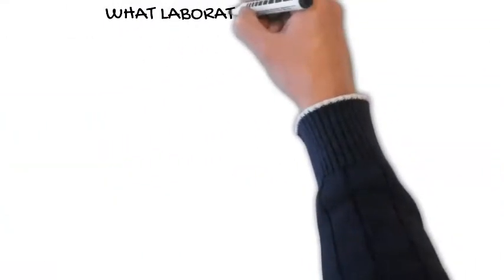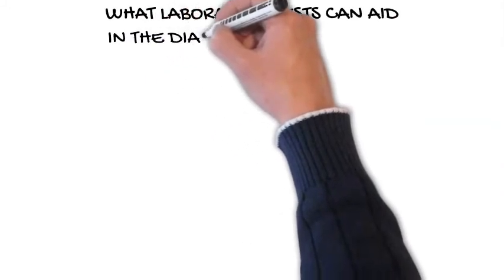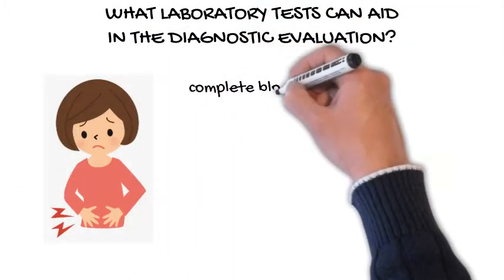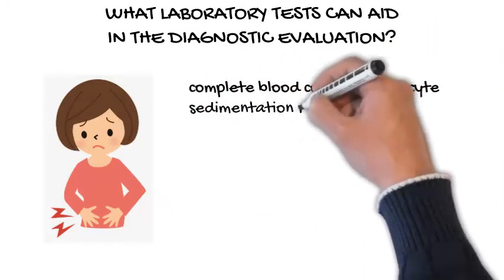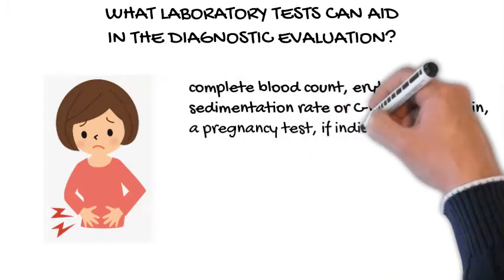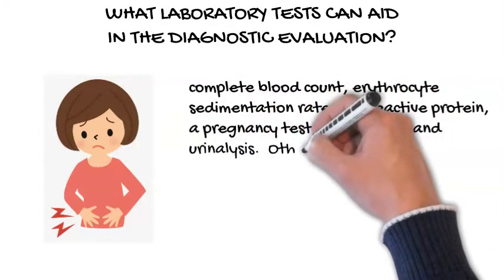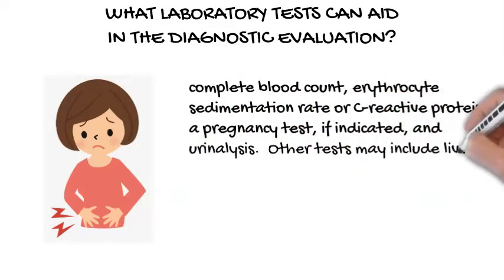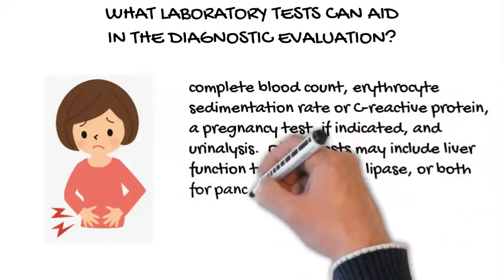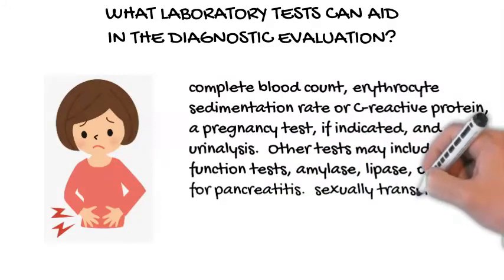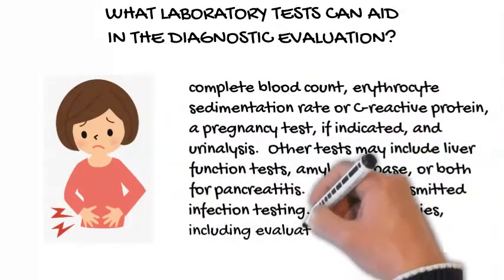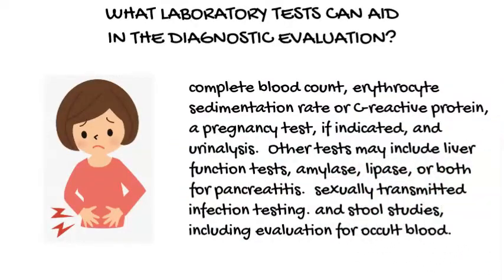What laboratory tests can aid in the diagnostic evaluation? Initial laboratory tests should include a complete blood count, erythrocyte sedimentation rate or C-reactive protein, a pregnancy test if indicated, and urinalysis. Other tests may include liver function tests, amylase, lipase, or both for pancreatitis, sexually transmitted infection testing, and stool studies, including evaluation for occult blood.